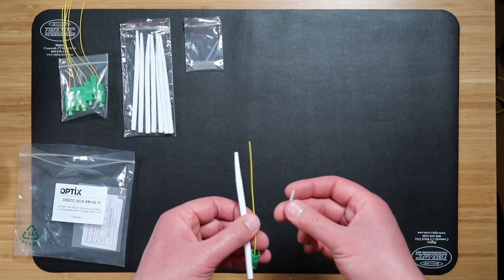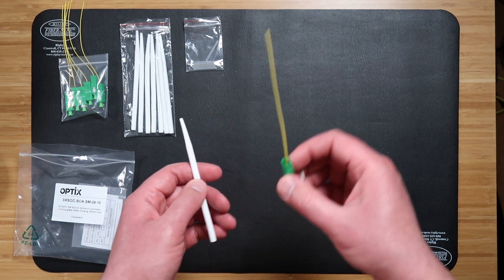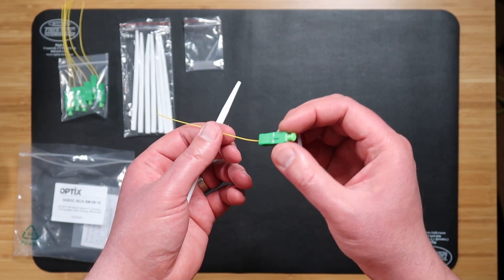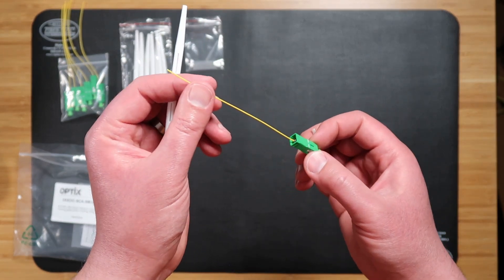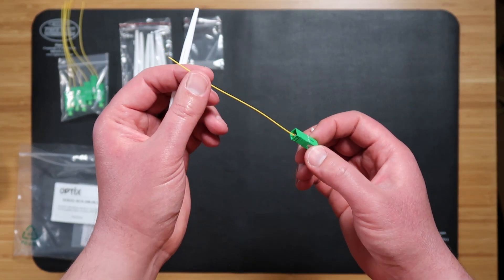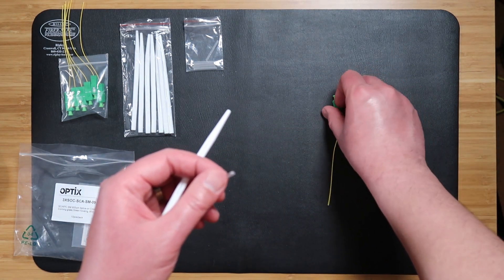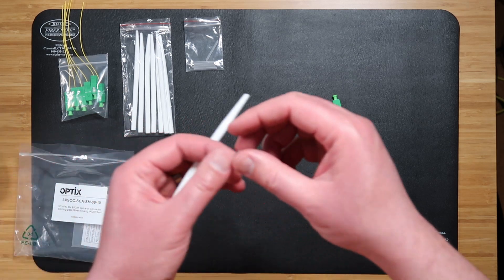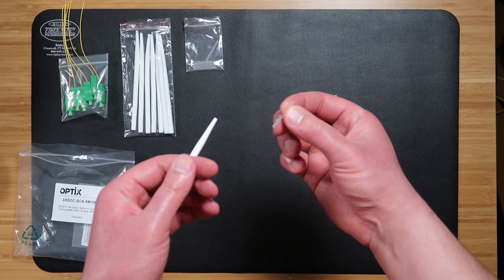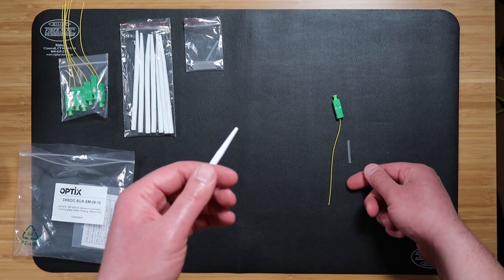There are three main parts to the splice-on connector kit. The first part is the connector itself, which looks very similar to a typical pigtail. The length is specific, allowing extra length for multiple termination attempts if necessary. Connecting the fiber stub with your actual fiber, in this case our spool, we'll be using the included fiber protection sleeves that come with the kit to do the fusion splice.